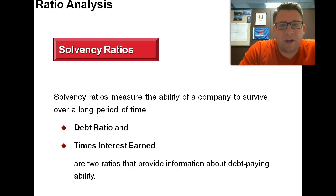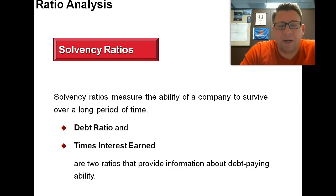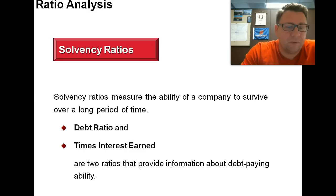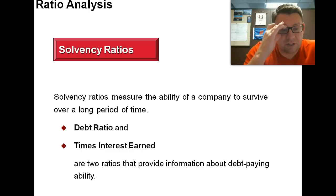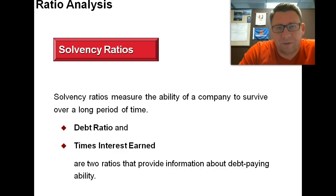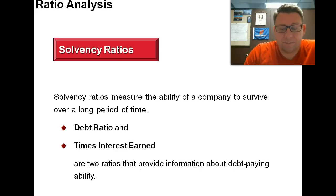Solvency ratios measure the ability of a company to survive over a long period of time. The two we're going to focus on here are the debt ratio and times interest earned, which really is the number of times interest has been earned. These ratios provide information about our ability to pay debt.